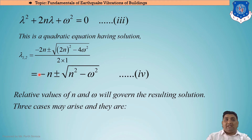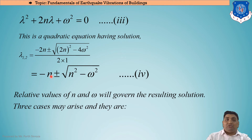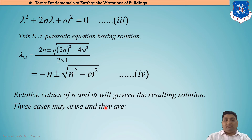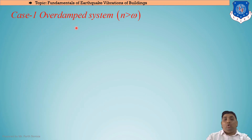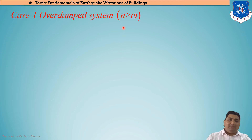The relative values of n and ω govern the resulting solution for λ. There are three possible cases: first, n greater than ω (overdamped); second, n equal to ω (critically damped); and third, n less than ω (underdamped). The system is differentiated into these three parts.